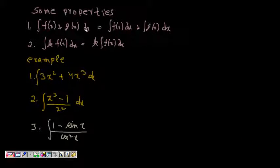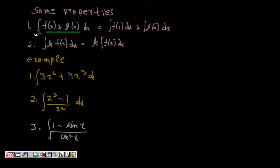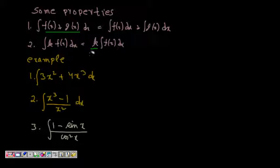Some useful properties: just like differentiation, if you have a sum of integrands such as f(x) + g(x), you can separate them: ∫[f(x) + g(x)]dx = ∫f(x)dx + ∫g(x)dx. Also, a constant factor k can be pulled out: ∫k·f(x)dx = k·∫f(x)dx.